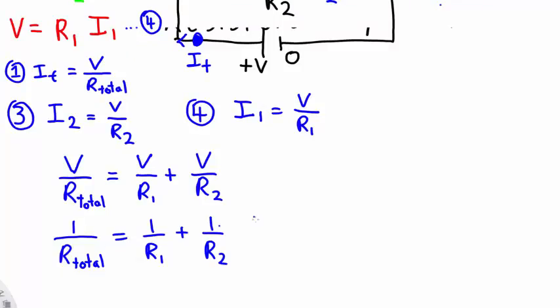It so happens you can generalize this formula for any number of resistors and it takes the form: 1 over the total resistance is equal to 1 over R1 plus 1 over R2 plus 1 over R3 plus 1 over R4 and so on. Now note this formula only works for resistors that are in parallel.